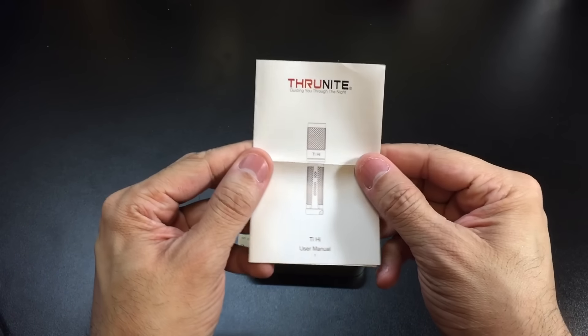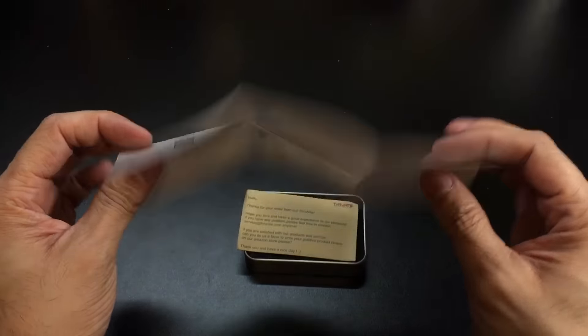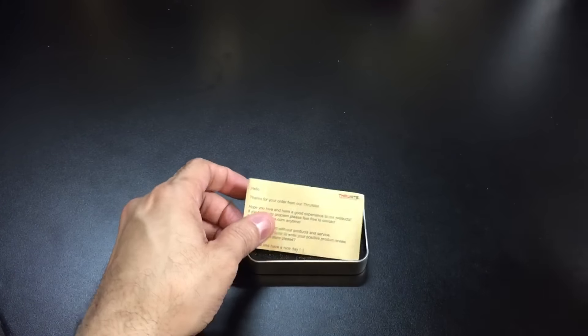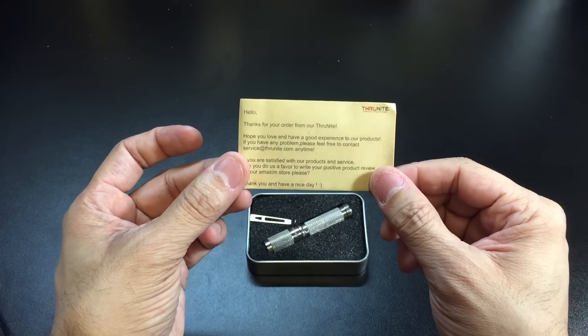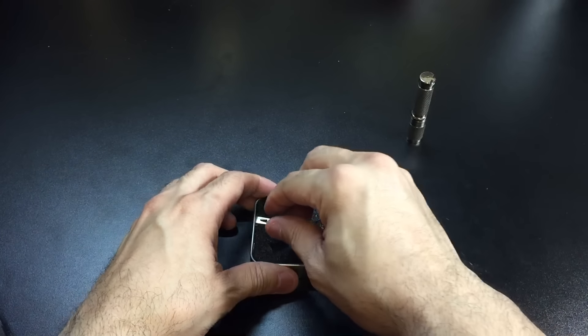The first one is obviously your user manual. And as always, I do recommend that you guys read through it. It's very short, very to the point. ThruNite does a great job at doing that. You have your welcome little message right here. This is the flashlight itself. So let's set it to the side for a second.